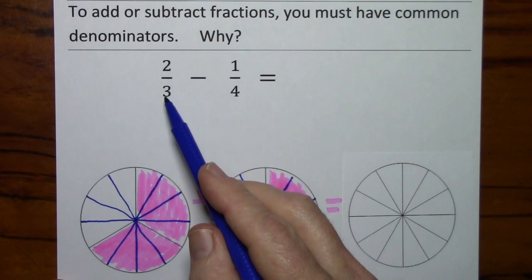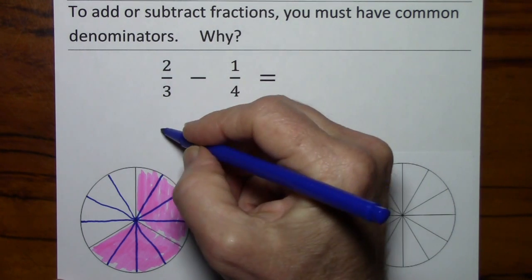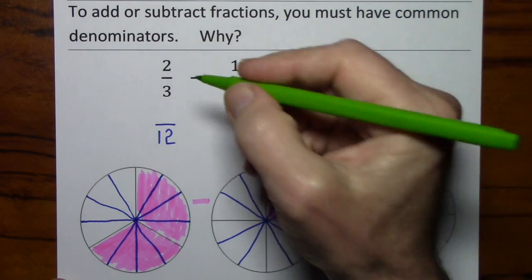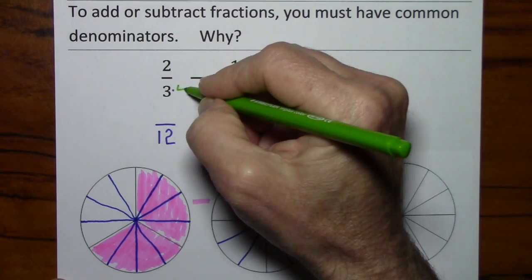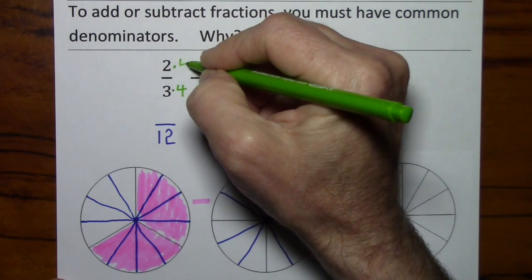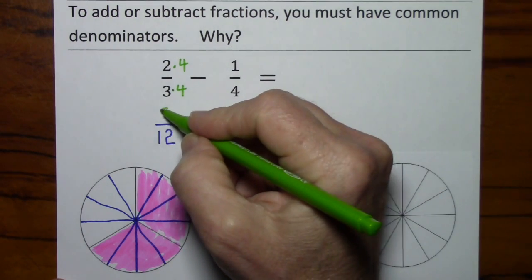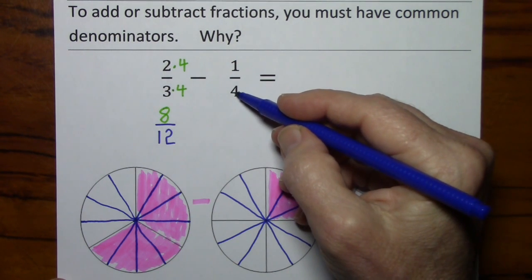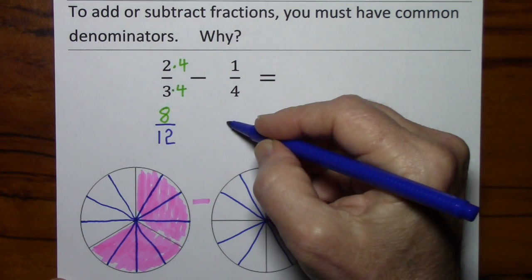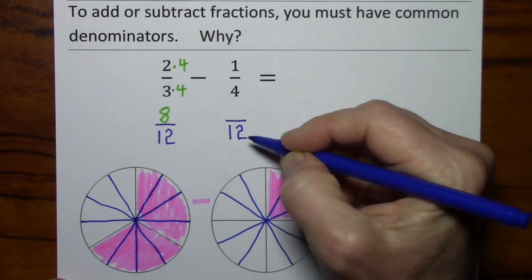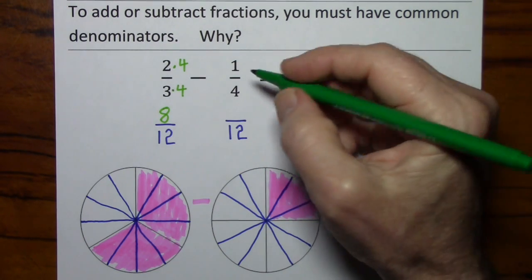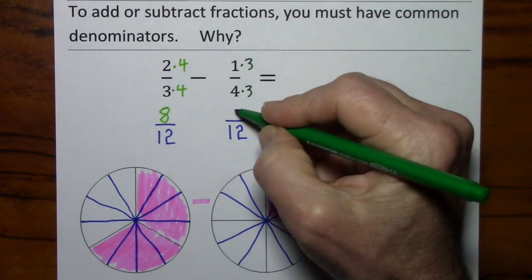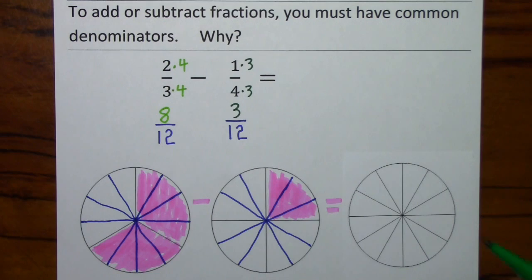Now mathematically, to change from thirds to twelfths, you multiply by 4 and multiply by 4. This gives us 8 twelfths. You multiply by 3 and multiply by 3. This gives us 3 twelfths.